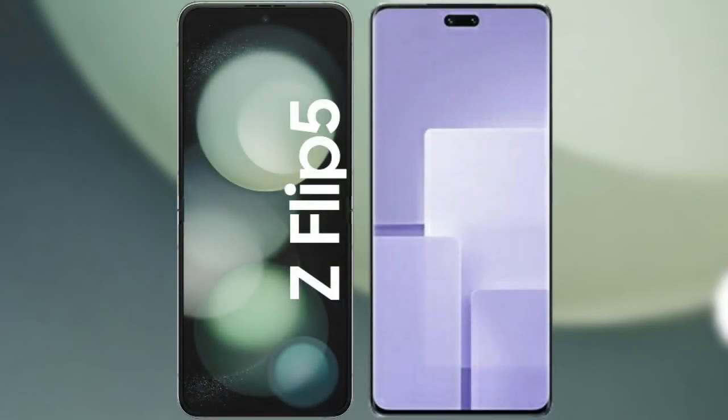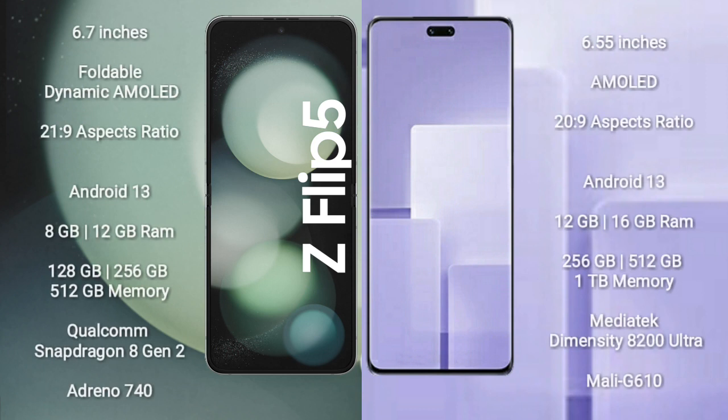I will compare the new Samsung Galaxy Z Flip 5 with Xiaomi CB3. Samsung Galaxy Z Flip 5 comes with a 6.7 inches foldable dynamic AMOLED display and aspect ratio 21:9. Xiaomi CB3 comes with a 6.55 inches AMOLED display and aspect ratio 20:9.